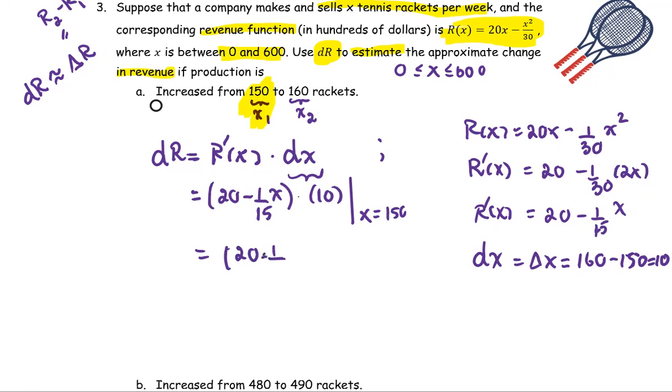We have 20 times 1 minus 1 over 15 times 150 and then multiply by 10. And as you see, 15 and 150 reduce to be 10. So 20 minus 10, that's 10. And then multiply by 10. The number is 100.